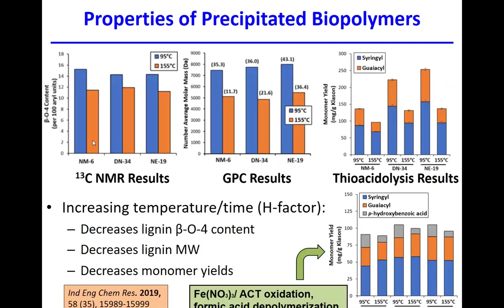Looking at lignin properties across three poplar genotypes at low temperature (95°C) versus high temperature (155°C), we can see the number of ether linkages within the polymer and the molar mass by gel permeation chromatography. These are correlated: higher ether linkage content corresponds to higher molecular weight, and higher molecular weight polymers give higher yields of aromatic monomers when subjected to reductive acetylation. At harsher conditions, you break bonds but also reform bonds that make depolymerization more difficult.